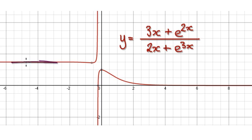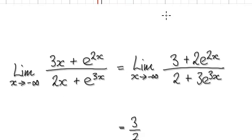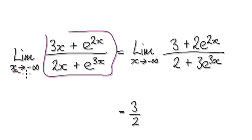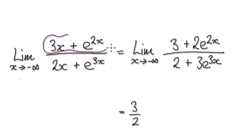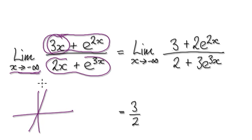Finding the horizontal asymptote is a bit like finding the limit of this as x tends to negative infinity. So let's visualize this as one thing divided by another thing. As x tends towards negative infinity, this is like a graph of y equals 3x. As x tends towards negative infinity, you can see that it is going to head towards negative infinity.